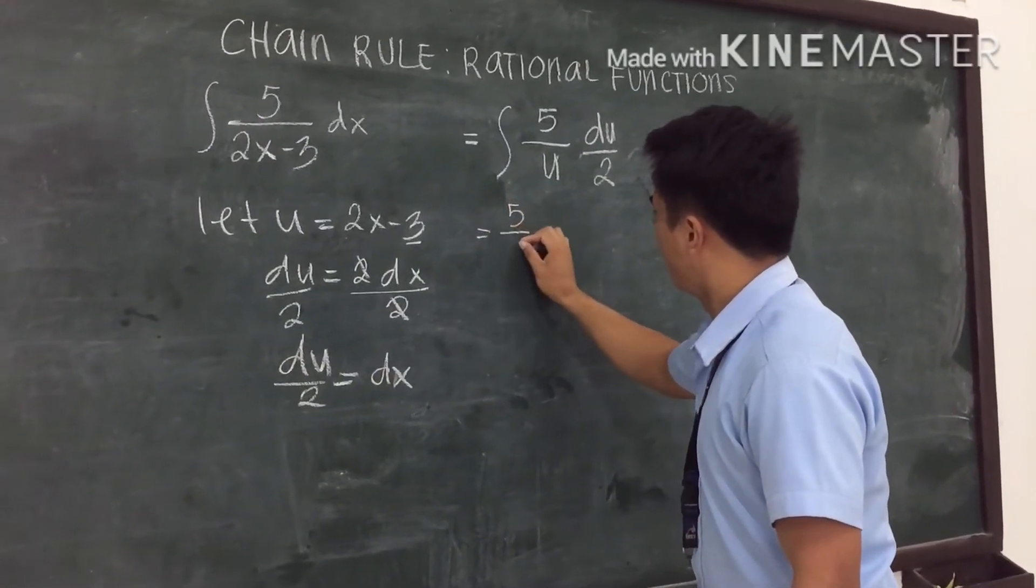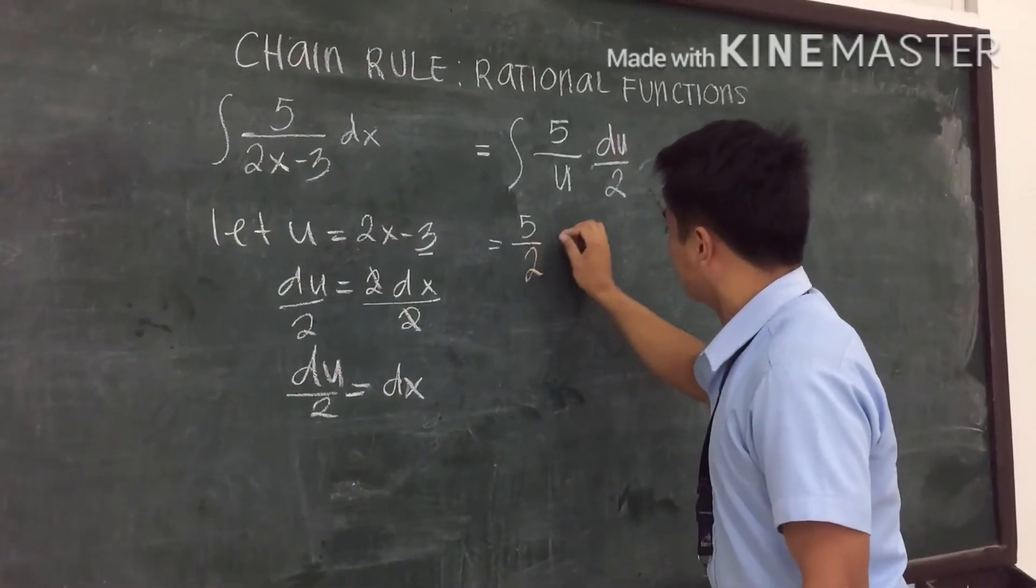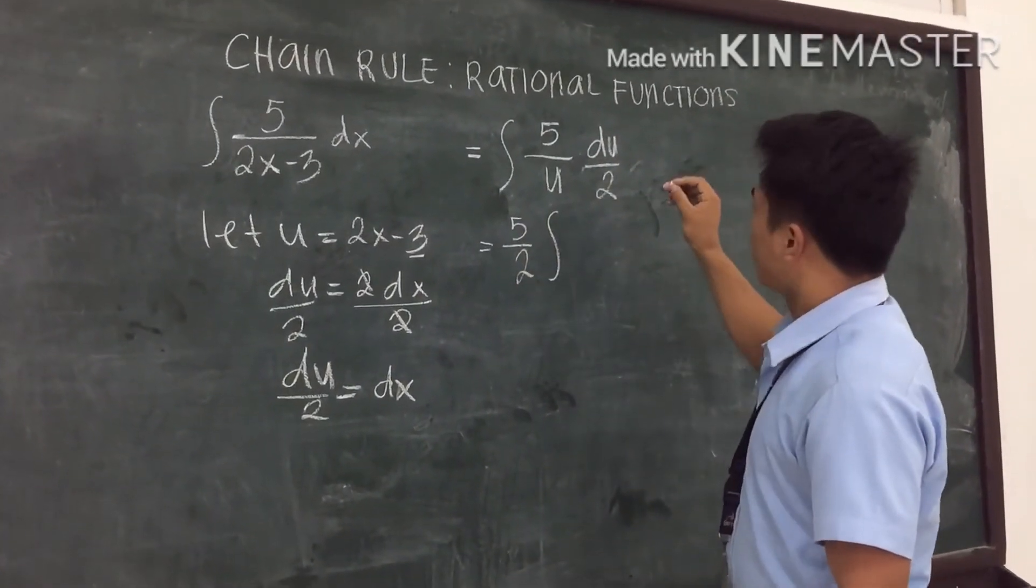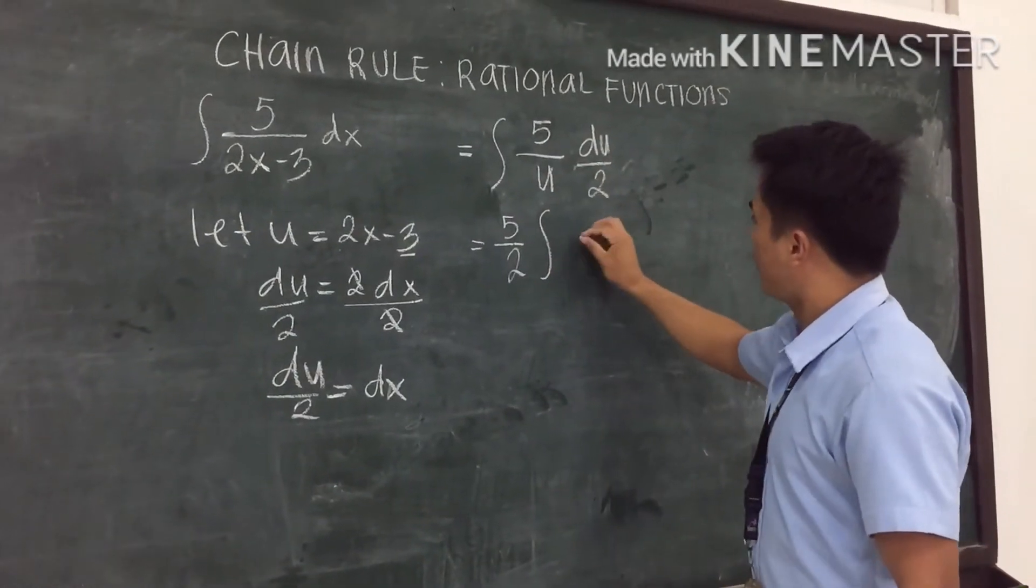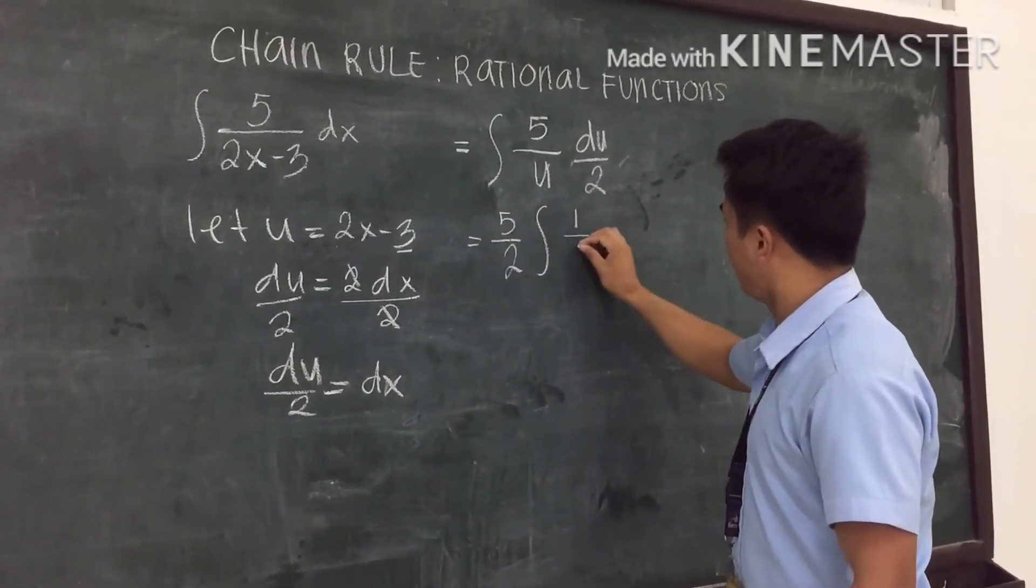So we can now transpose the 5 over 2. The remaining is 1 over u.